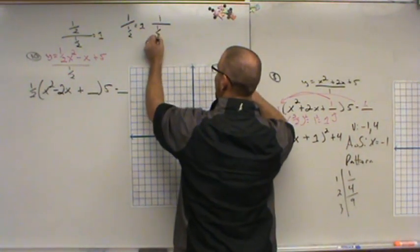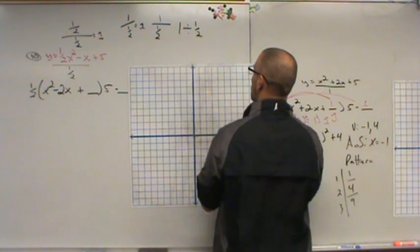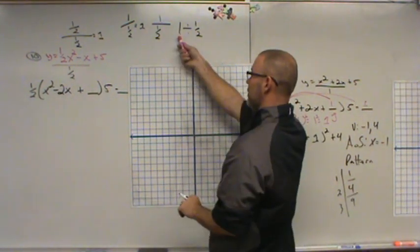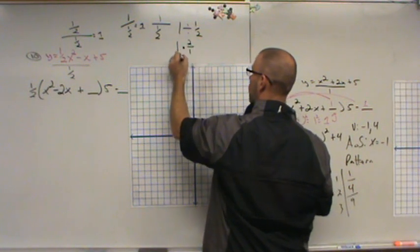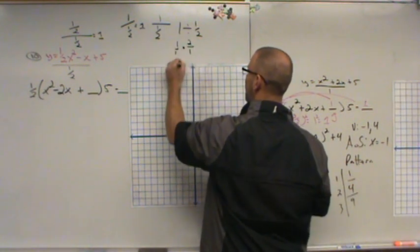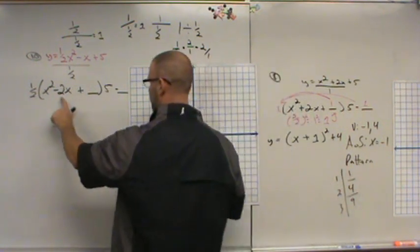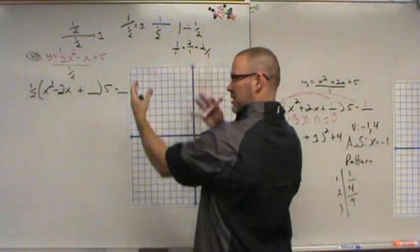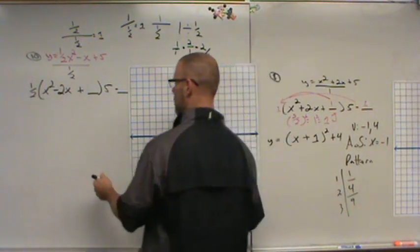Well, one divided by a half can be rewritten as one divided by a half. When you're learning fractions, keep, change, flip. So keep, change, two over one. One itself is a fraction, one over one. And if I multiply, I get two over one. All right? That's what makes this whole problem hard. I mean, one divided by a half is not a hard concept.